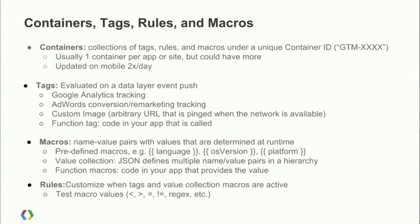Let's talk a bit about containers, tags, rules, and macros. A container is a collection of these values. Normally you would have one container for a website or one container for an application — so if you publish three different applications you'd probably want to have a container separate for each one. It's possible to have multiple containers for an application but that's not very common. A container has a container ID associated with it, and as you remember, when we initialized our container we provided that ID and got back that container on the device.